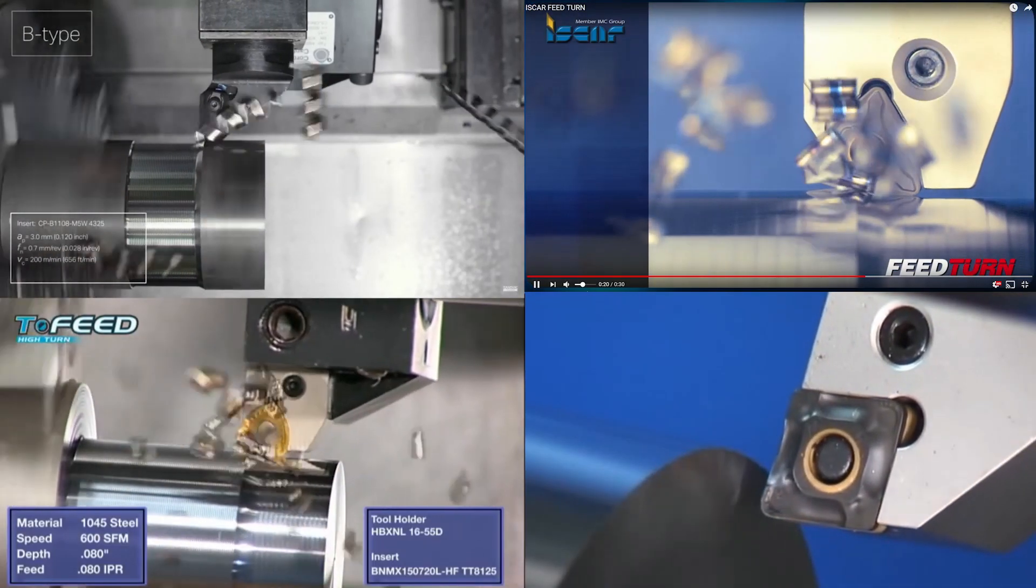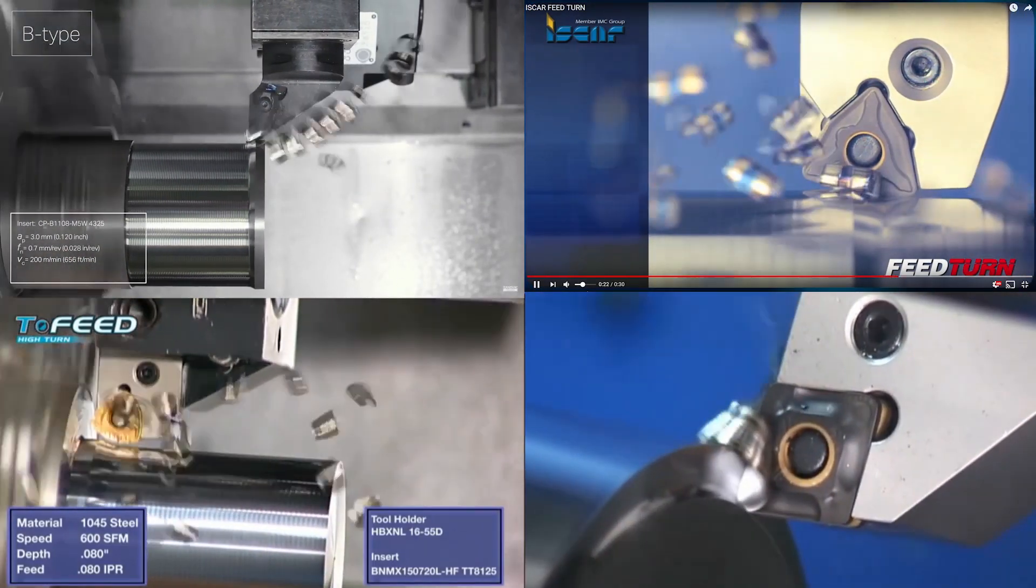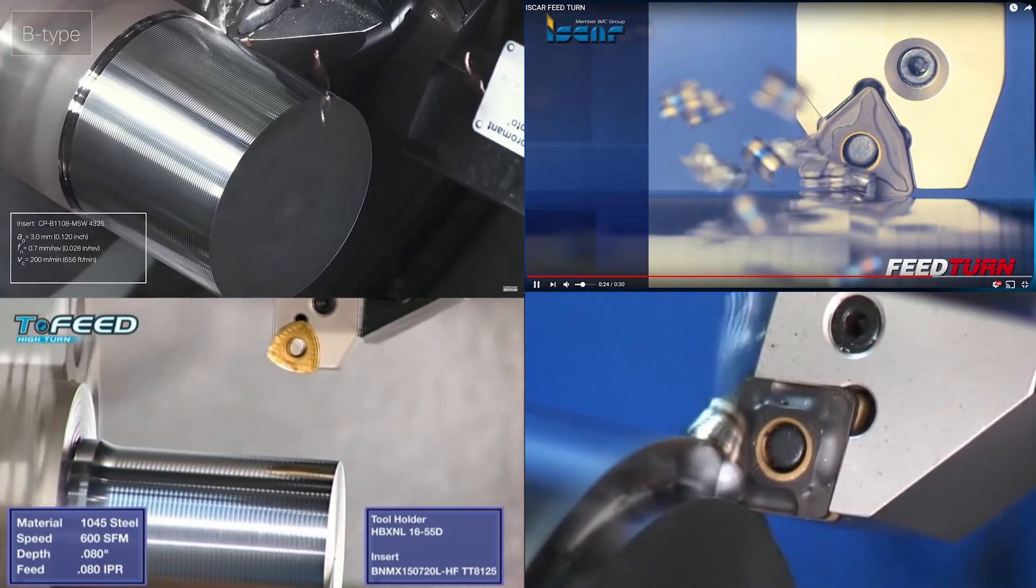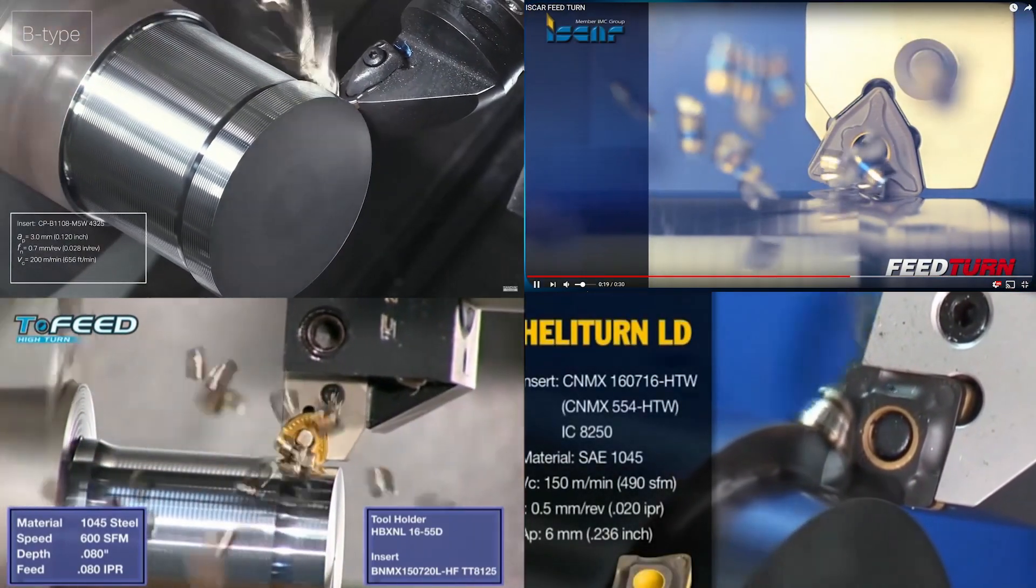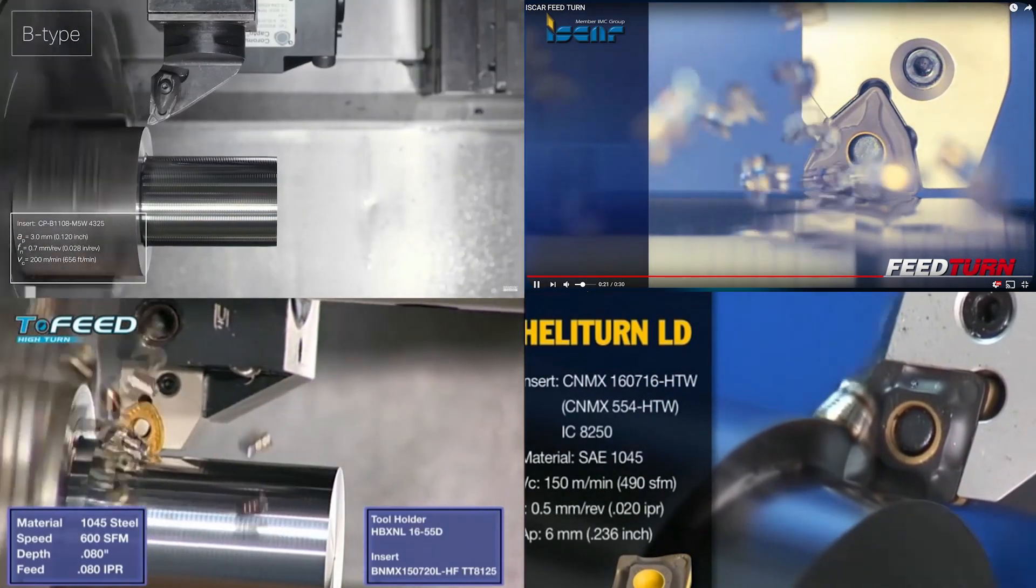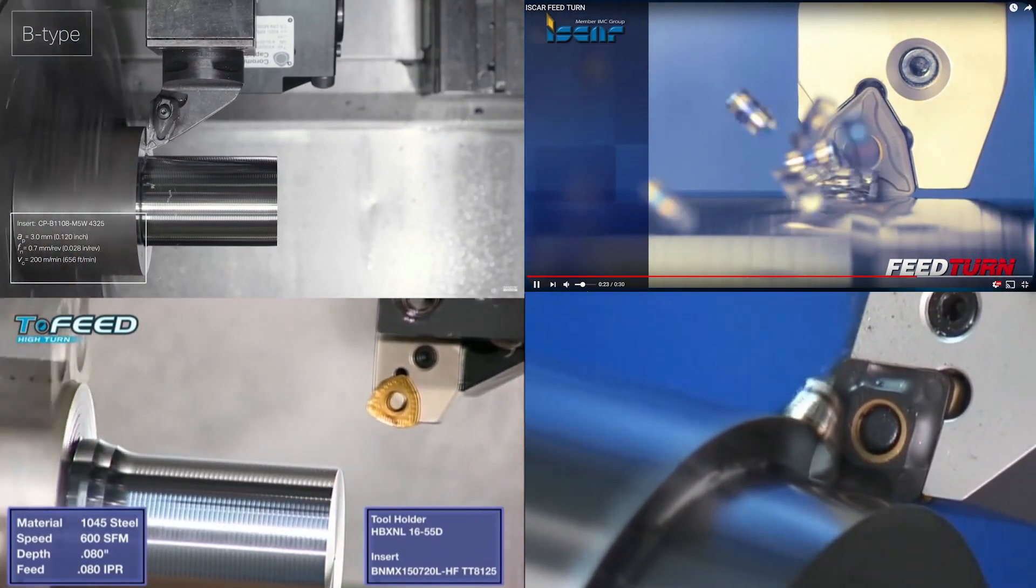All right, in this video we're going to be taking a look at several roughing methods on the turning centers, and I went ahead and arranged them in order from least to highest metal removal rate. So let's go ahead and take a look.